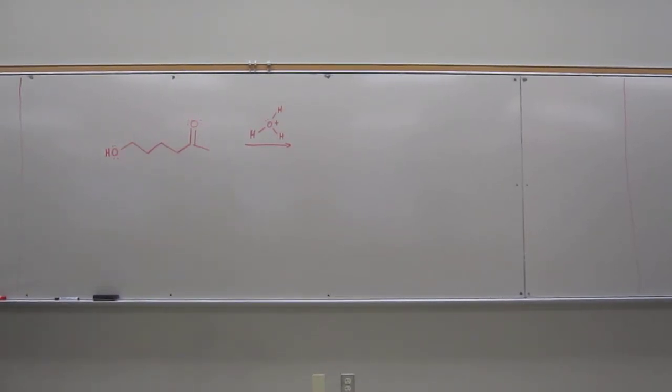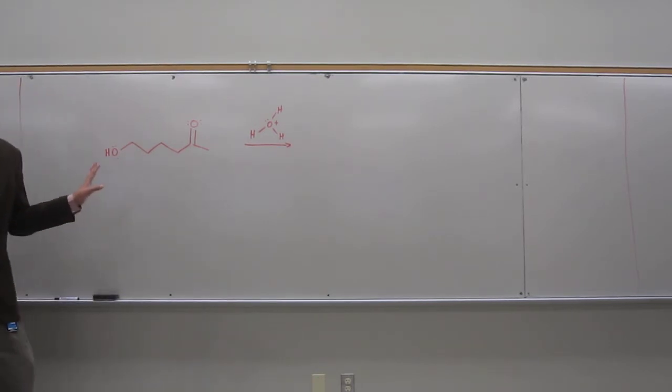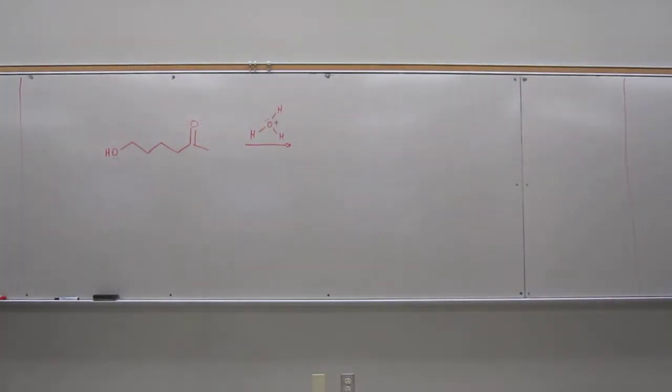Okay, let's do this one. We were talking about things that will form stable hemiacetals. What are the types of molecules that can form a stable hemiacetal? Five or six-membered rings.